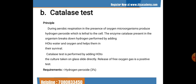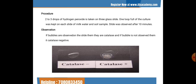Release of free oxygen gas indicates a positive test. The requirement is 3% hydrogen peroxide. Two to three drops of hydrogen peroxide are placed on three glass slides — for the water sample, soil sample, and milk sample. One loop-full of culture is taken on each slide. The slide is observed after 10 minutes — if bubbles are observed, it is catalase positive; if no bubbles, it is catalase negative.